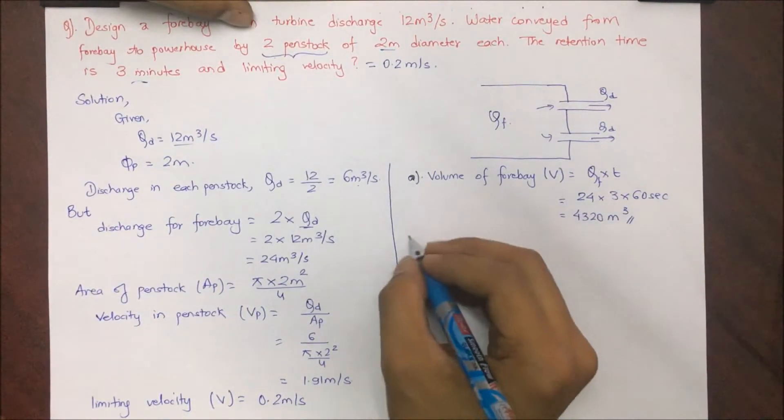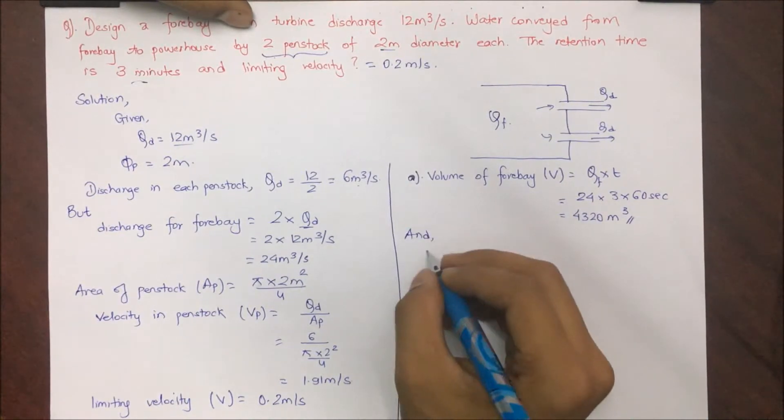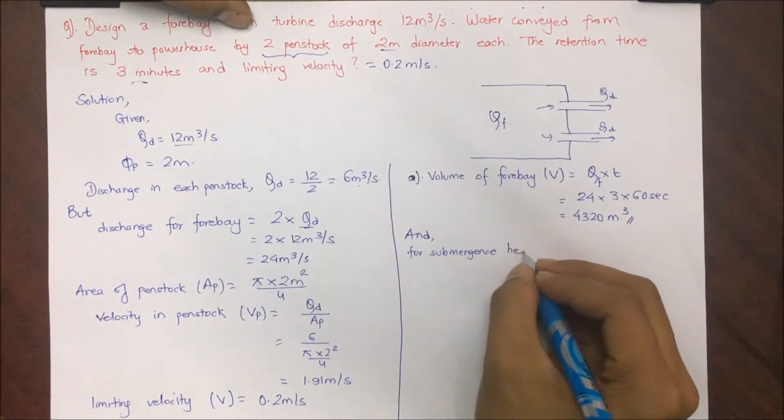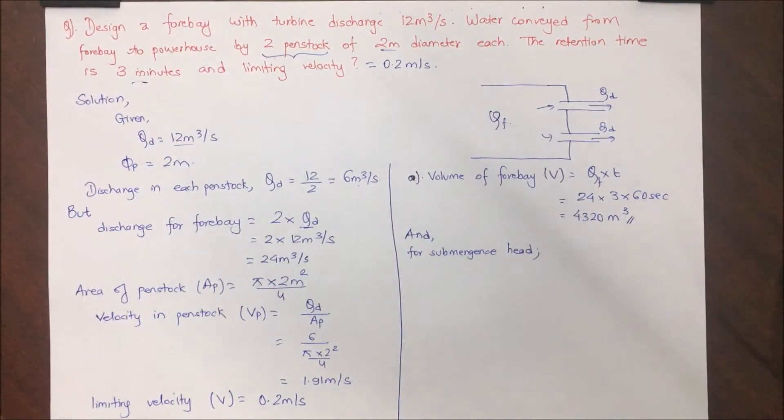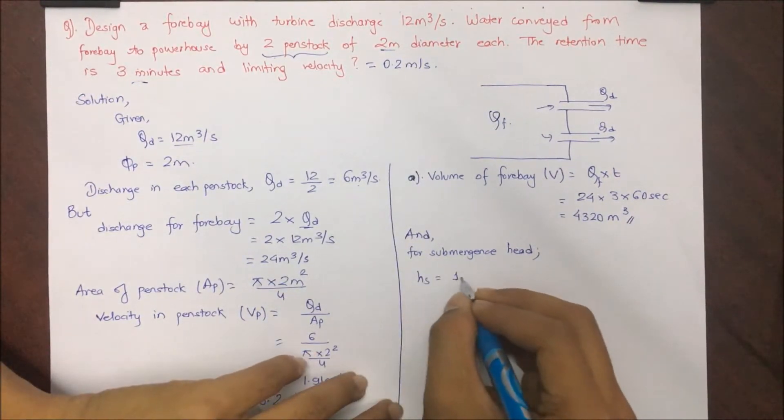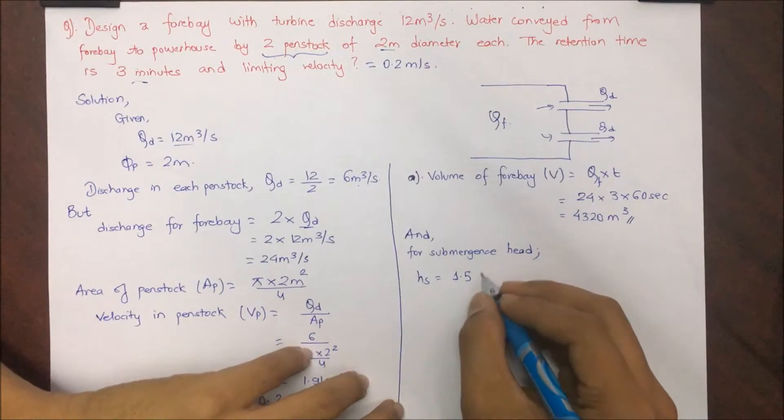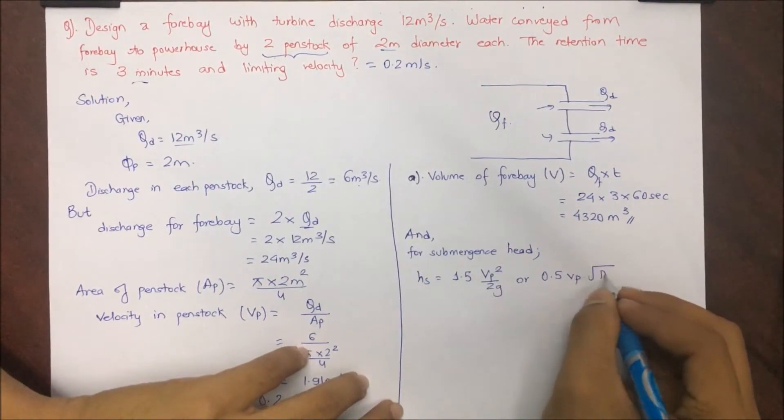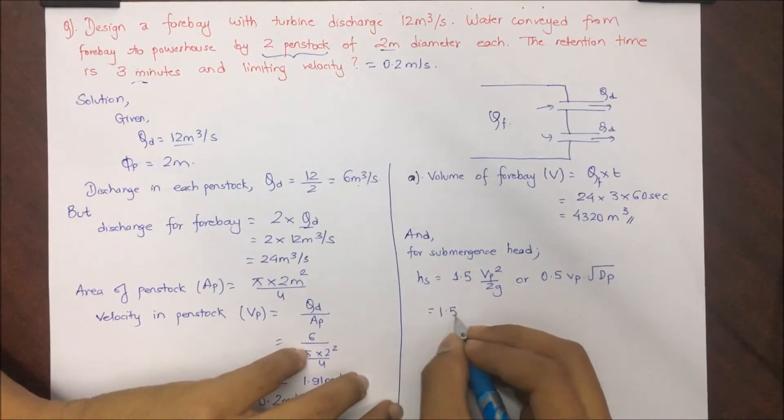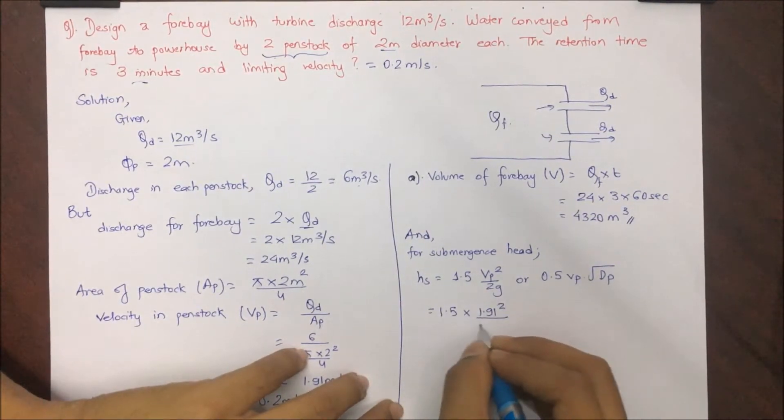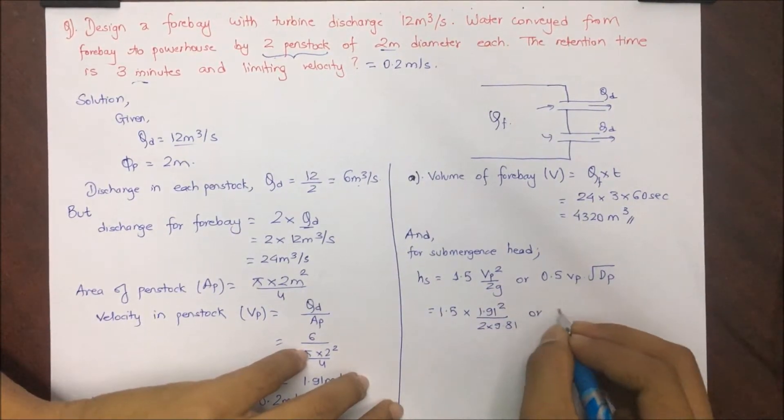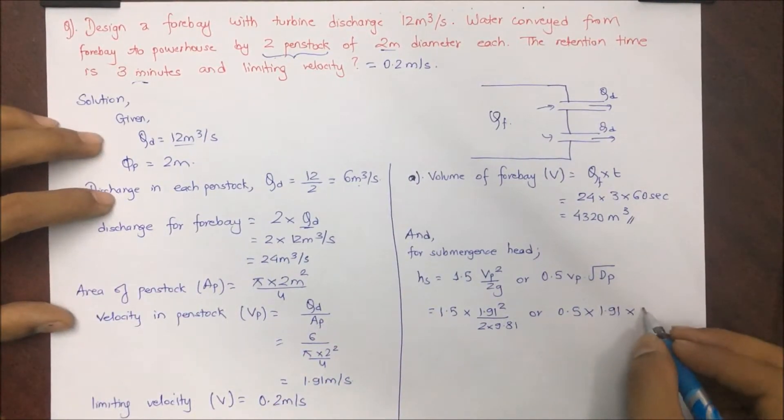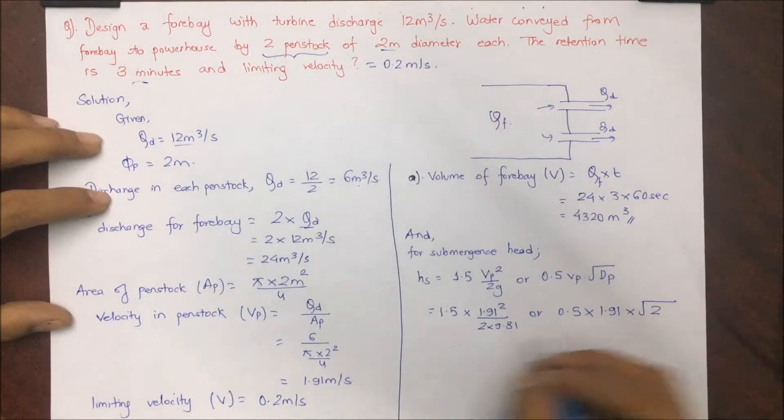We have to calculate the submergence head, for which we have two values and the greater value is taken. So 1.5 Vp square by 2g or 0.5 Vp under root dp. Vp is velocity in penstock, which is 1.91 square divided by 2 into 9.81, or Vp as we have already calculated and dp is the diameter of penstock.